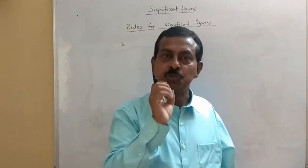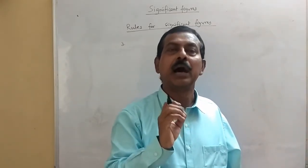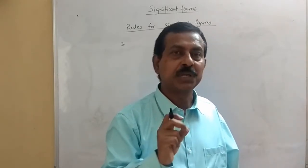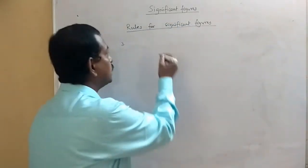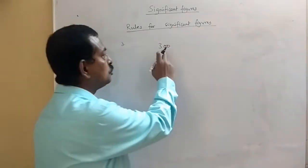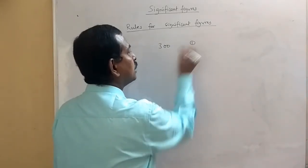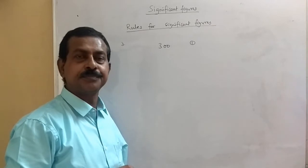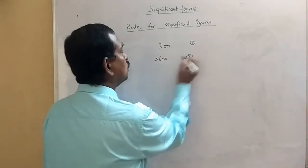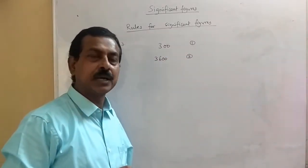The third rule: zeros at the end of a number are non-significant. For example, if I write 300, these zeros are at the end of the number, so they are non-significant, and the number of significant figures is 1. If it is 3600, it will be 2, because the two zeros are not significant.